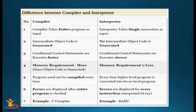Here we can see a tabular form showing the difference between the compiler and the interpreter. The compiler takes the entire source program, while it is not so for the interpreter. An intermediate object code is generated by the compiler, while no such output is generated by the interpreter. Control statements are handled differently as compared to the interpreter. The memory requirement is there for the compiler.